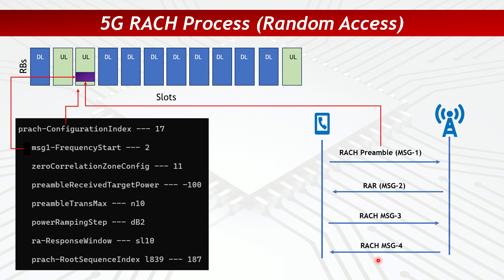One possible problem is that the UE is sending the RACH preamble but the gNodeB is not receiving it. The UE will keep retransmitting until it reaches the preamble transmission maximum — here set to N=10, meaning the UE can send it up to 10 times. A possible cause is that the UE is too far away or transmitting at insufficient power. To address this, we can increase the preamble receive target power, which raises the UE's transmit power for the preamble, or increase the power ramping step so each retransmission adds more power.